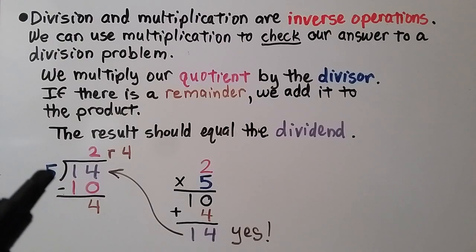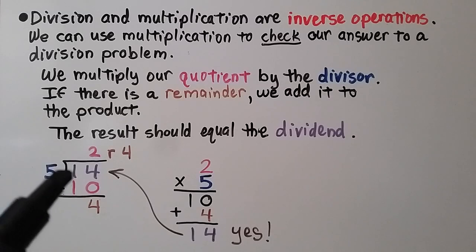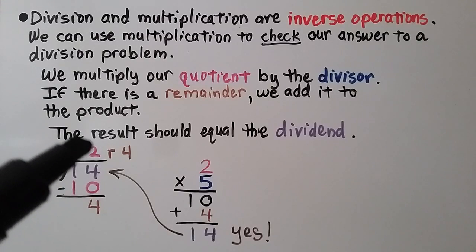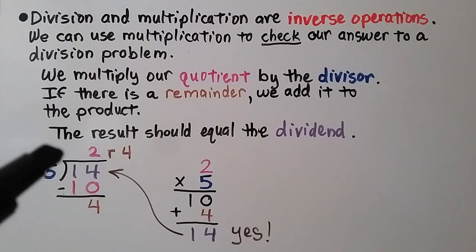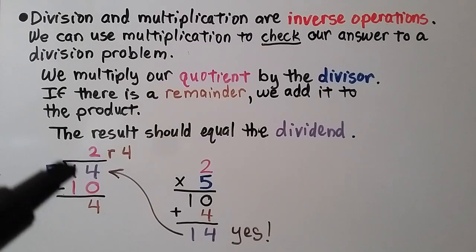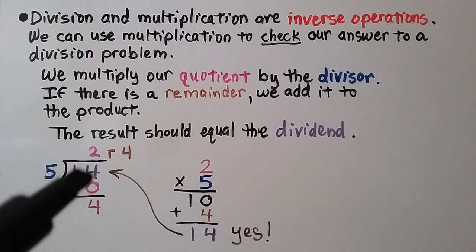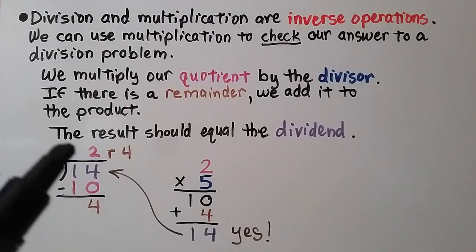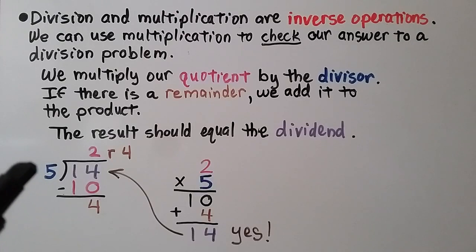Division and multiplication are inverse operations. We can use multiplication to check our answer. We multiply the quotient by the divisor; if there's a remainder, we add it to the product, and the result should equal the dividend. Here we have 14 divided by 5. How many times can 5 fit into 1 — it can't, so we include the second digit to make 14. How many times can 5 fit into 14 — two times, because 5 times 2 is 10. We write our 2 above the 4. We subtract our 10 and get a remainder of 4. To check it, we multiply quotient 2 times divisor 5 — that's 10 — then add the remainder 4, giving us 14. Yes, it matches our dividend.